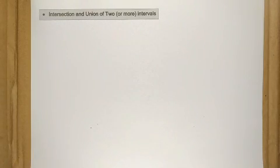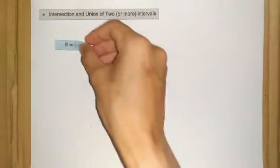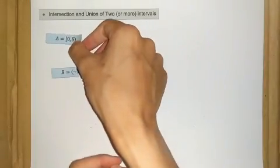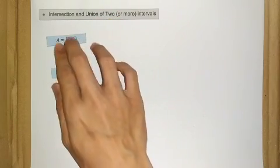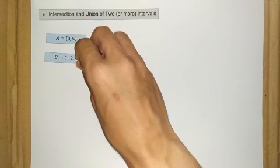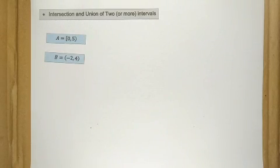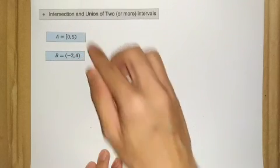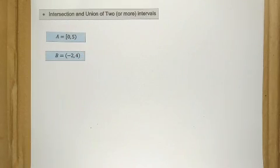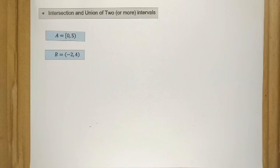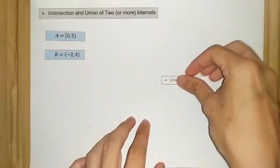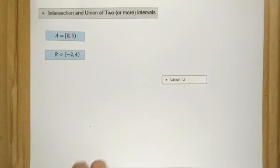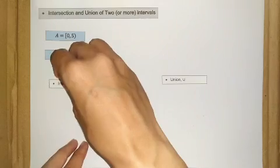Let's say we have these two intervals: interval A and interval B. We have A as the half-open interval from 0 to 5, and for B we have the open interval from negative 2 until 4. Let's look at their union and also their intersection.